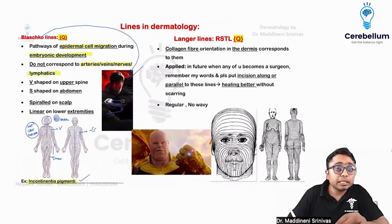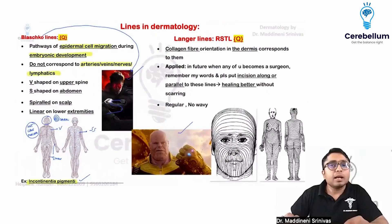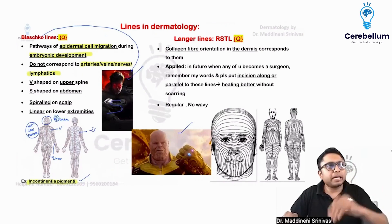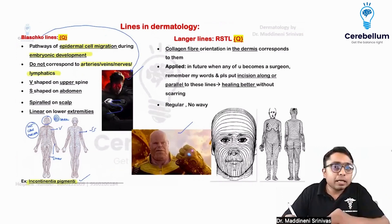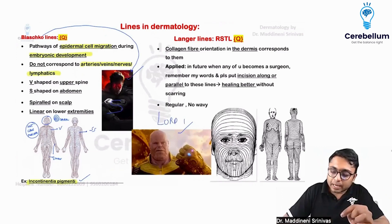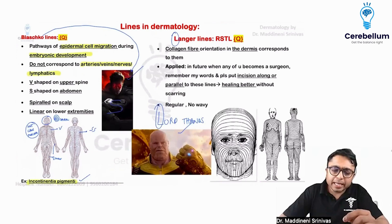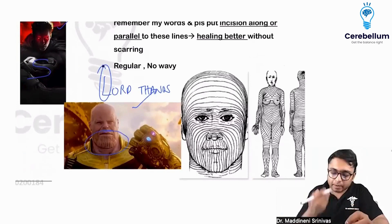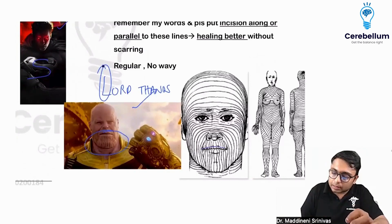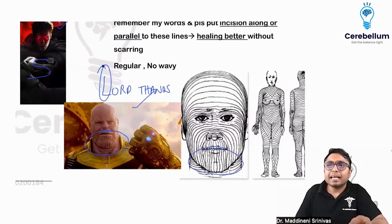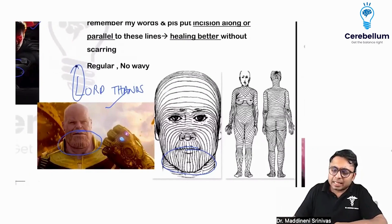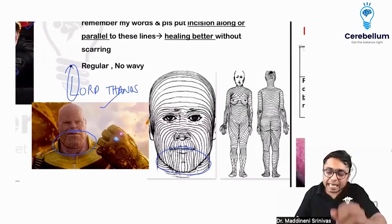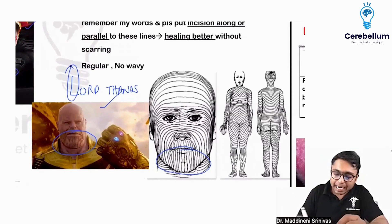Now coming to Langer's lines. We discussed a superhero for Blashko's lines, so now we are going to discuss a villain — Lord Thanos. 'Langer' sounds like 'el Thor' — Lord Thanos. Look at this pattern visible on the chin of Thanos; a similar pattern is seen in Langer's lines. This helps you identify and differentiate between Blashko's lines and Langer's lines.